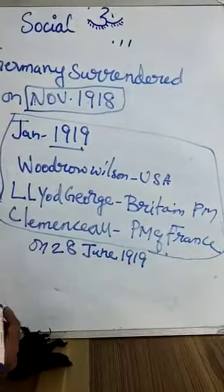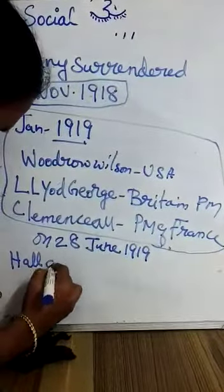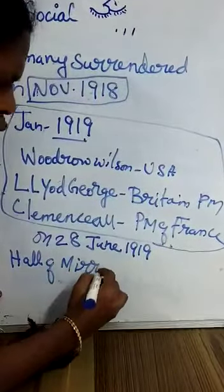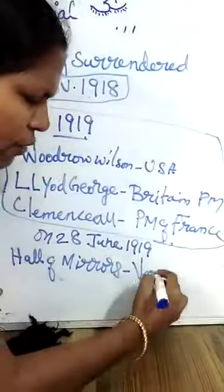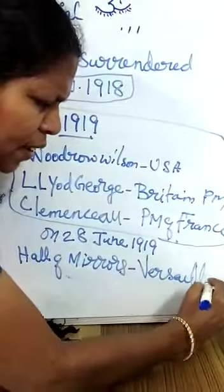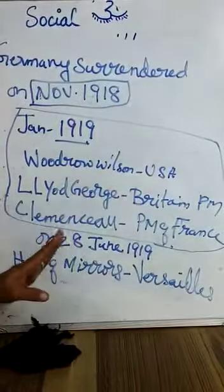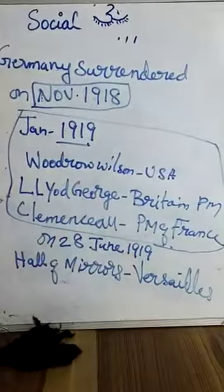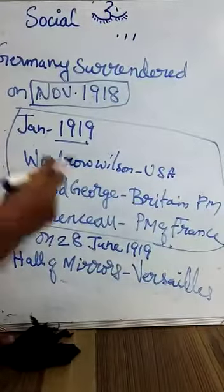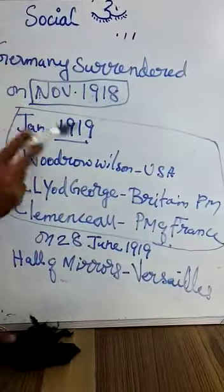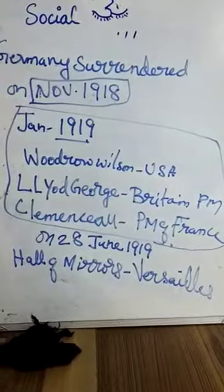They signed in the Hall of Mirrors at Versailles. The place where they signed is the Hall of Mirrors, which is in Versailles. They signed on 28th June 1919 and started to have a peace conference. These people signed, and along with Germany also signed. Next we will take another class on the League of Nations.